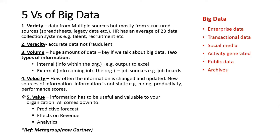Volume is really about how huge the amount of data is — we have a lot of data. When we're talking about data, we talk about two types of information: internal information within the organization, things like outputs to Excel, Access, et cetera, and then external information coming into the organization, for example job sources like job boards. Then we move on to number three, which is velocity — how often the information is changed and updated. Information is not static; it shouldn't be. You should be updating it as it changes. Things like hiring productivity and performance scores are usually changing because we're doing annual appraisals and monitoring performance, but personal information like addresses and telephone numbers can become stagnant if we don't prompt employees to update us.